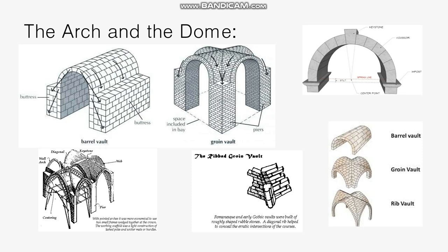Welcome back — we're continuing our discussion of architecture, Unit 4. When we last left off we were covering the different types of barrel vaults and groin vaults, including the Gothic ribbed groin vault. In Gothic architecture we have a combination of ribbing, pointed arches, and groin vaults, and those groin vaults are now being used to make intersections that are not just right-angle intersections but all kinds of different intersections.